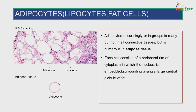This is an H&E stained slide of adipose tissue to show the adipocytes. The adipocytes occur singly or in groups in many but not all connective tissues, but are numerous in adipose tissue. Each cell consists of a peripheral rim of cytoplasm in which the nucleus is embedded, surrounding a single large globule of fat.